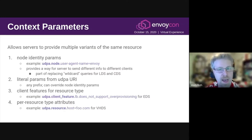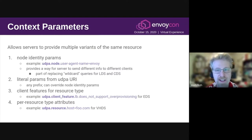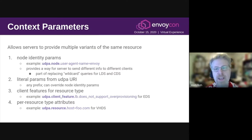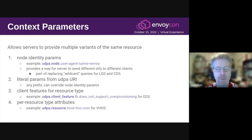The final source of context parameters is per-resource-type attributes. These use the prefix udpa.resource. Just like client features, these are not user-defined — they're added automatically by the implementation and defined for each resource type as needed. One concrete example is for VHDS: we plan to use this to allow the client to request the specific virtual host that it wants. This would be the thing that replaces the aliases mechanism that Harvey mentioned earlier.